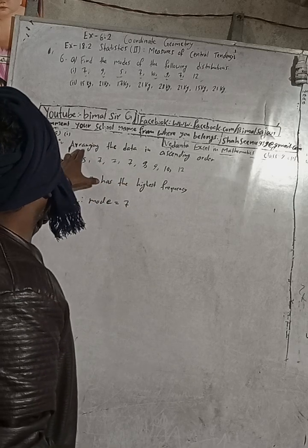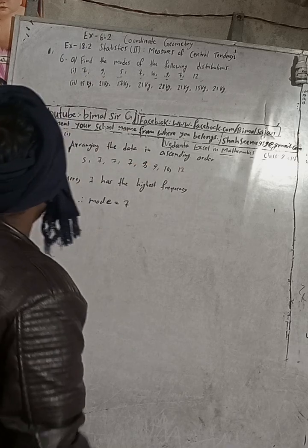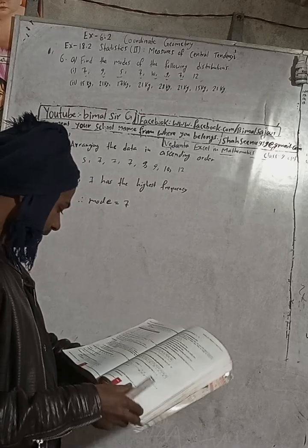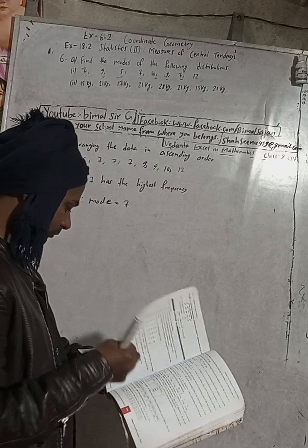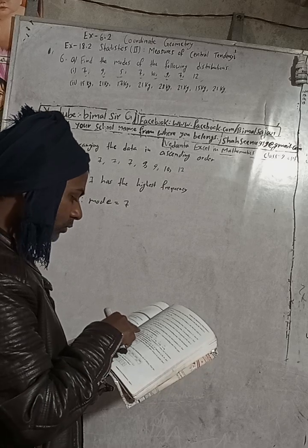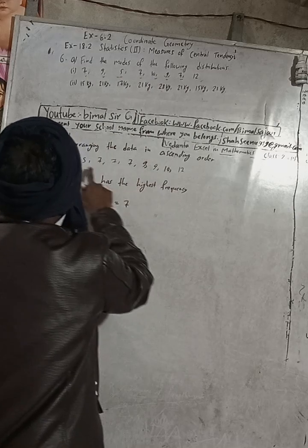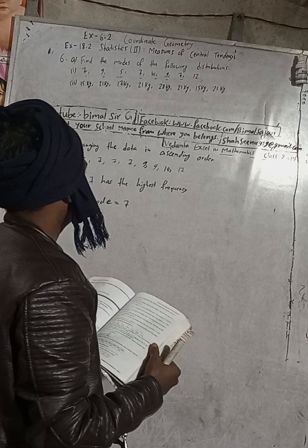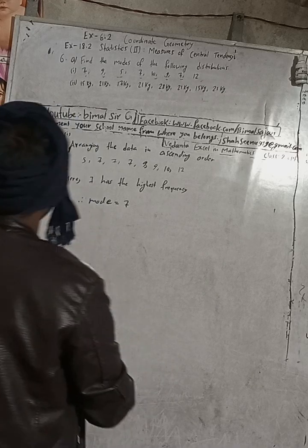We arranged the given data — which was not in ascending order — and confirmed: there are 8 data values in the book as well: 1, 2, 3, 4, 5, 6, 7, 8. Confirmed. That is the solution for number one. Now let's move to the number two solution.